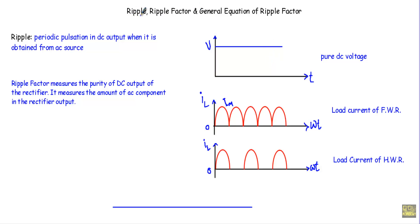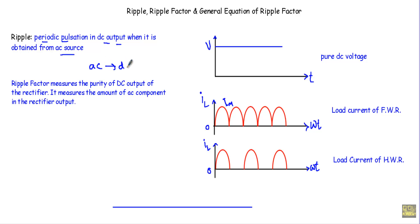In this video I will talk about ripple, ripple factor, and I will find a general equation of ripple factor. In my next video I will show you how to calculate the ripple factor for half wave and full wave rectifier circuits. Ripple is one kind of noise in the waveform. Ripple is a periodic pulsation in the DC output when it is obtained from an AC source. The objective of using a rectifier circuit is to convert the AC quantity into a DC quantity.